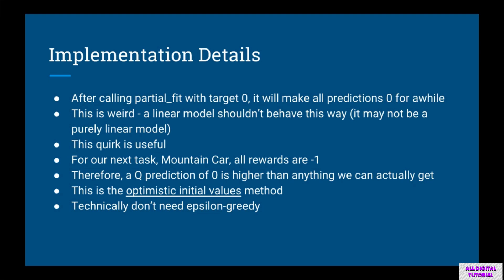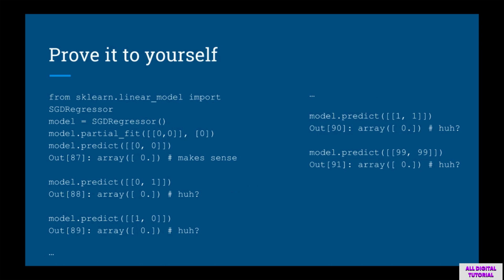Here is some code to prove this to yourself. We import SGDRegressor and initialize an instance, then fit an input vector [0,0] to target 0. Next we do a prediction on [0,0] and get 0 as expected. You'll see that no matter what input you try — [0,1], [1,0], [1,1], or even [99,99] — it still predicts 0. This clearly wouldn't be the case if we had a static vector of weights.